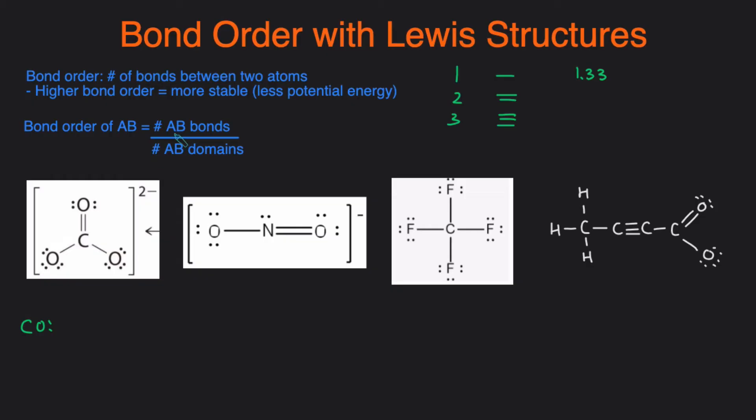So this is going to be the number of CO bonds. We have one, two, three, four. So four on top, divided by the number of CO domains. So this is going to be one, two, three CO domains. So that'll be four divided by three, which is 1.33 or one and one third. So that means that each of these bonds are one and one third of a bond, instead of a single bond or a double bond.